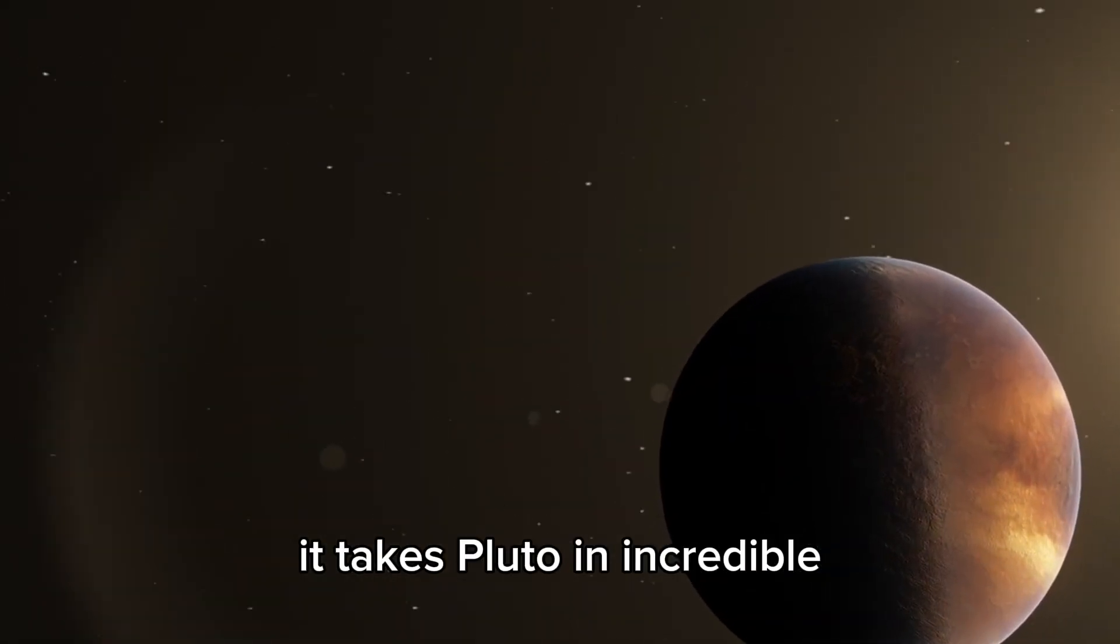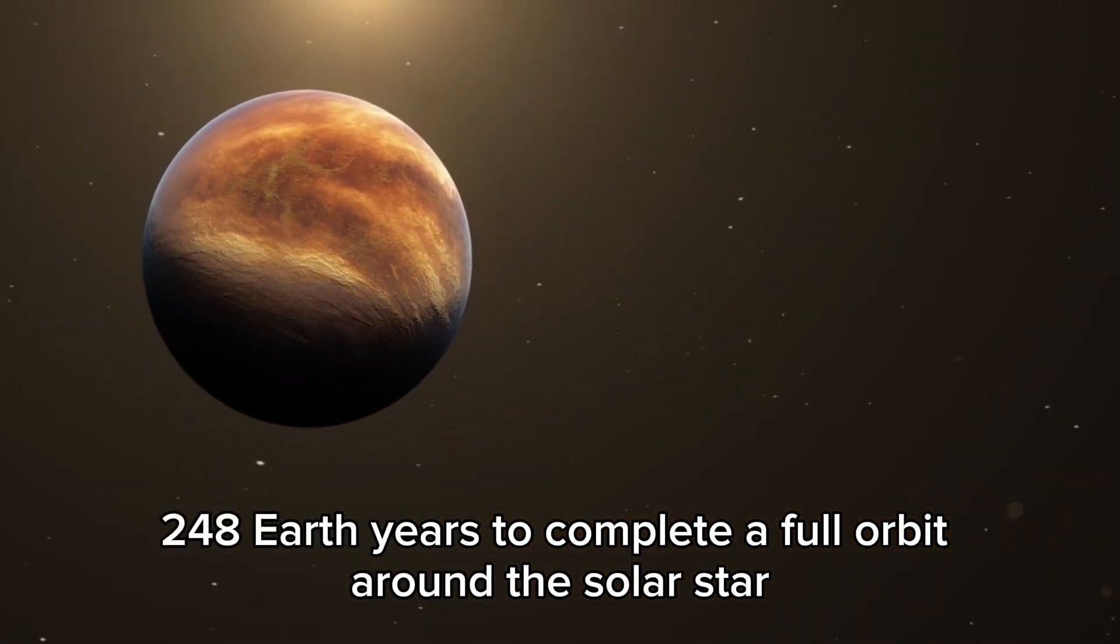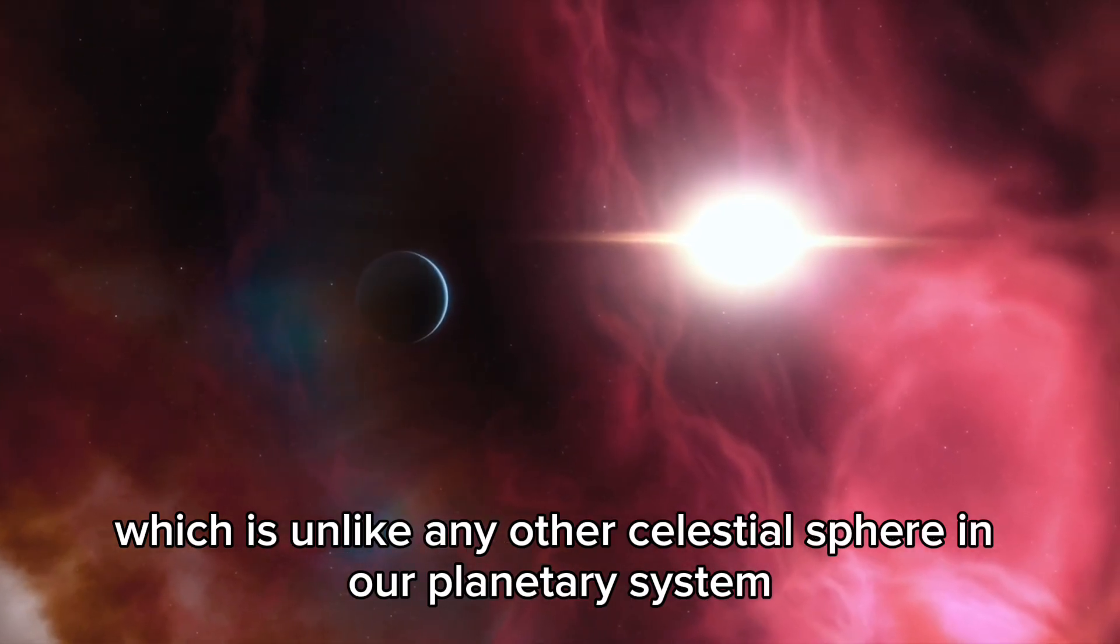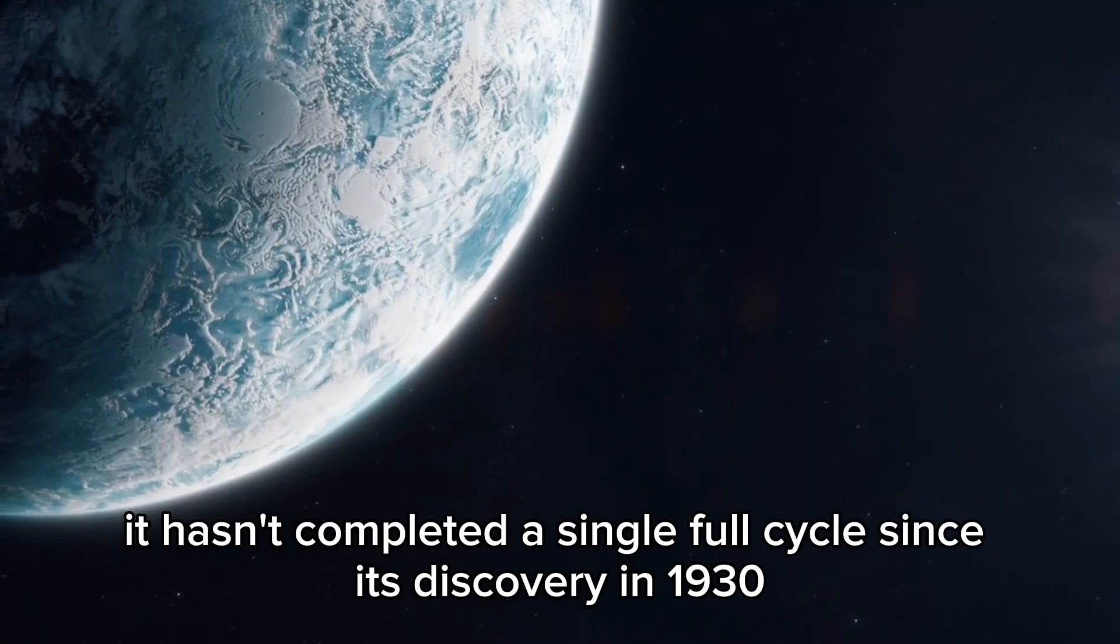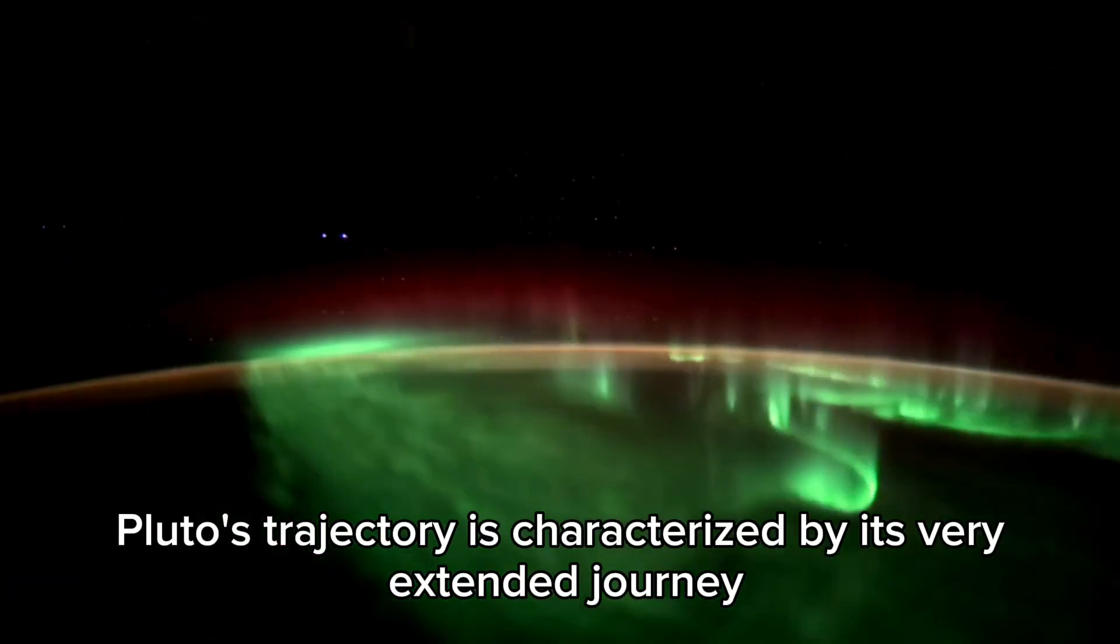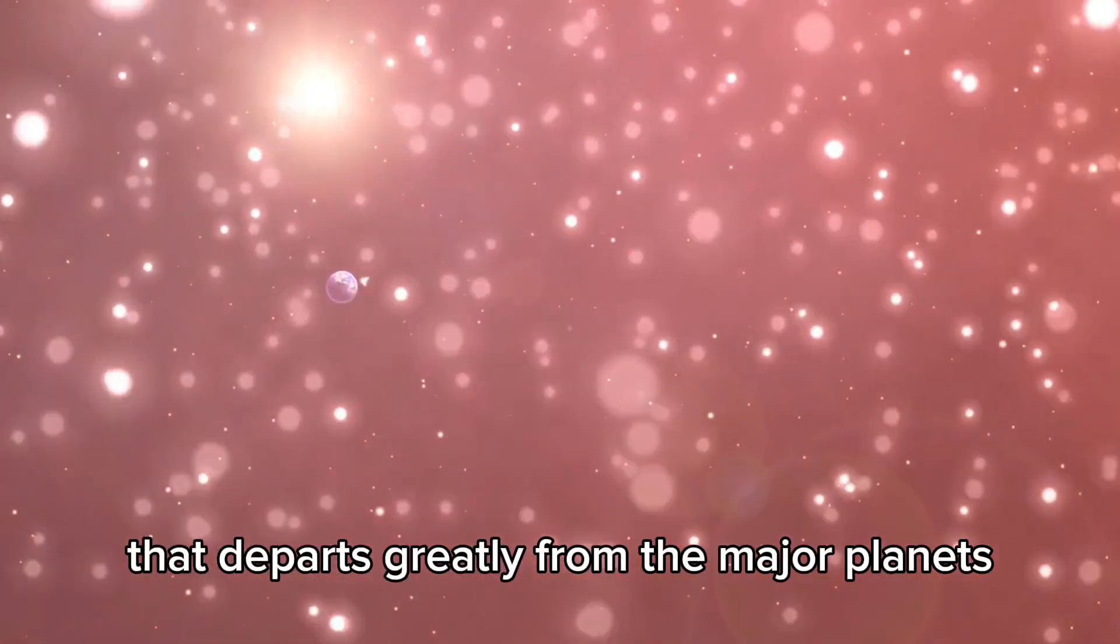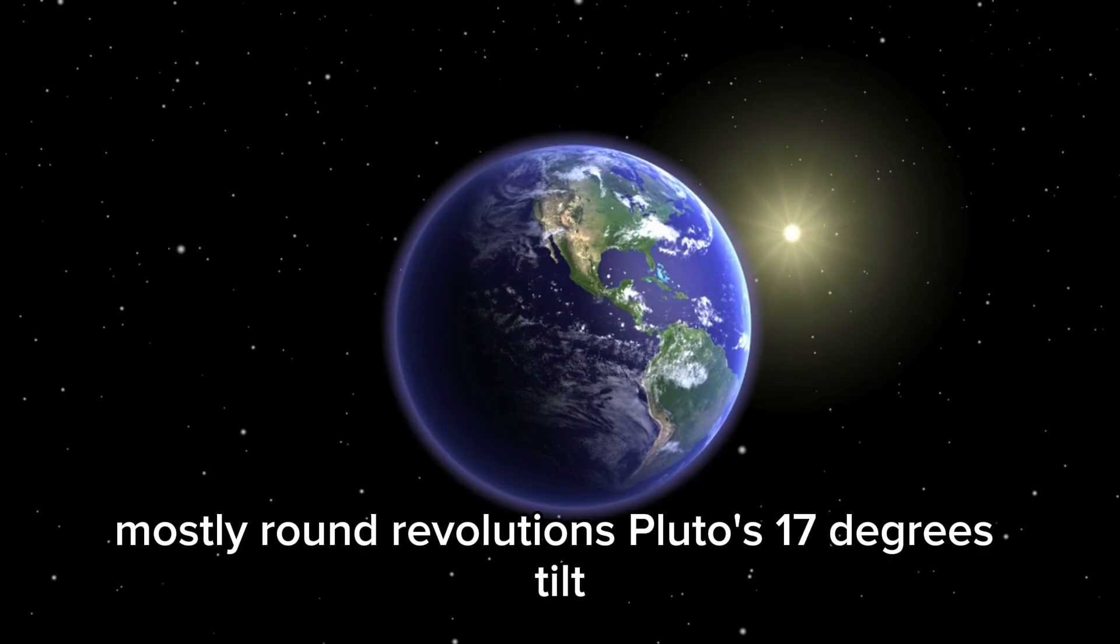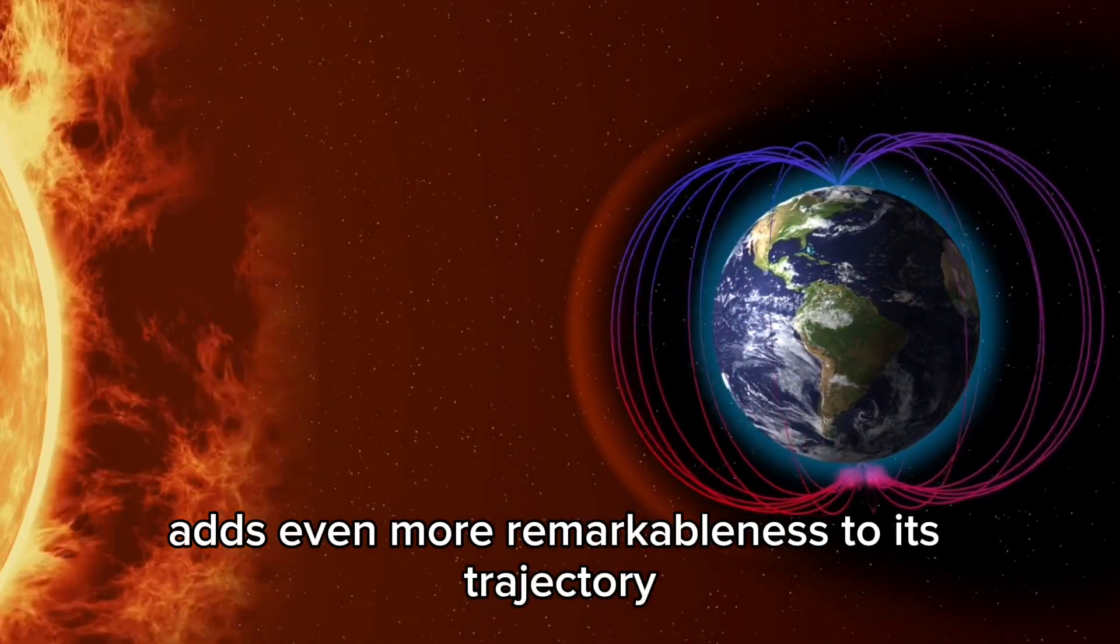It takes Pluto an incredible 248 Earth years to complete a full orbit around the solar star, which is unlike any other celestial sphere in our planetary system. It hasn't completed a single full cycle since its discovery in 1930. Pluto's trajectory departs greatly from the major planets' mostly round revolutions. Pluto's 17 degrees tilt adds even more remarkableness to its trajectory.